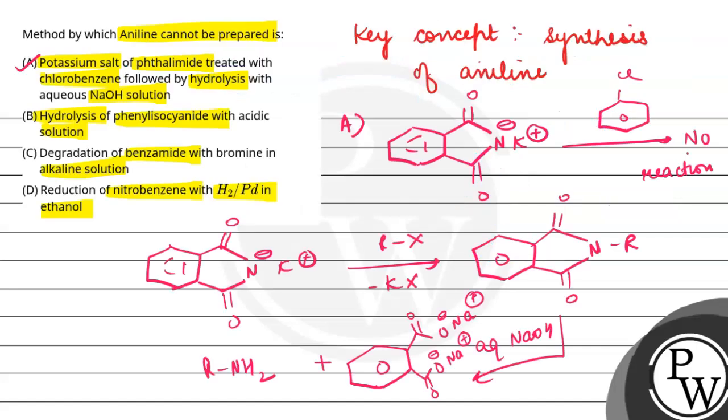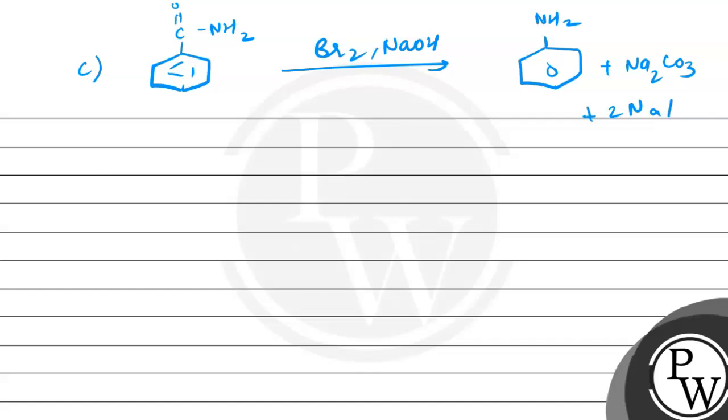Now what is the next method? What is degradation of benzamide with bromine? We have the C method which has benzamide. So this is benzamide. We will be able to do this if we use bromine and NaOH. In this case, we can synthesize aniline.